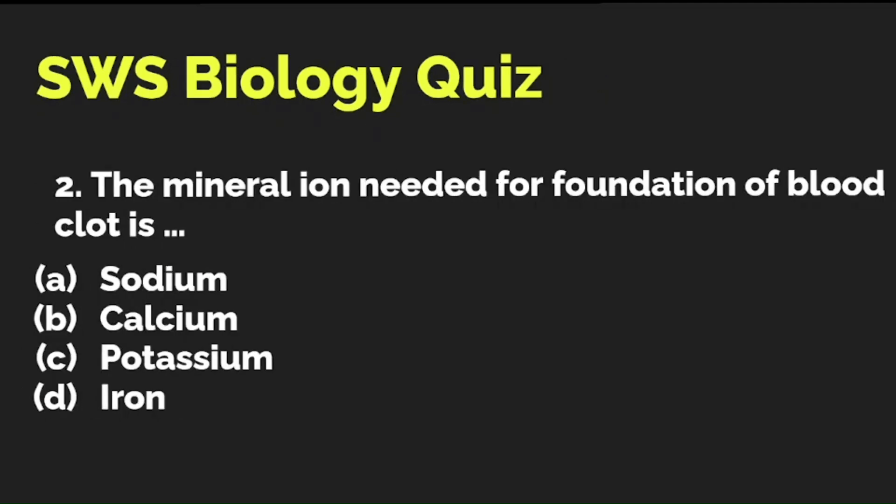The mineral needed for the formation of a blood clot — is it A) sodium, B) calcium, C) potassium, or D) iron? This question actually came in the 2016 board paper. The correct answer is B — calcium.